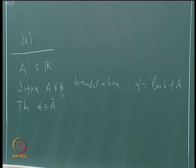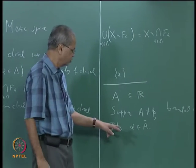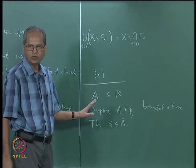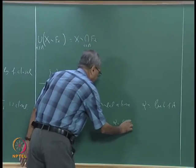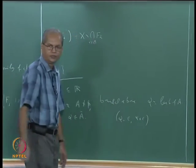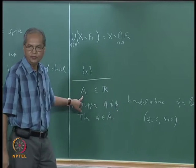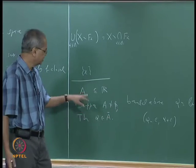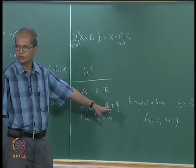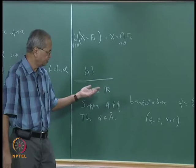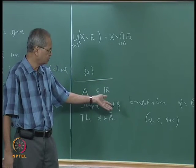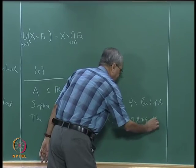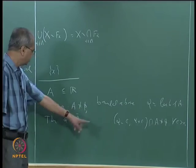How does this follow? Suppose you take any open ball with center at alpha. In the real line, this is an open interval of the form (alpha minus epsilon, alpha plus epsilon). Is it clear that such an interval must contain a point from A? Yes — for any positive epsilon, alpha minus epsilon is not an upper bound, so there exists x in A with x strictly greater than alpha minus epsilon and at most alpha. Such an x belongs to this interval, so its intersection with A is always non-empty for every epsilon greater than 0. That means alpha belongs to the closure of A.